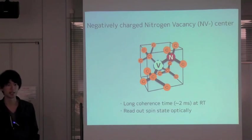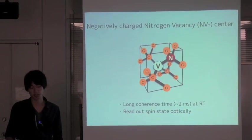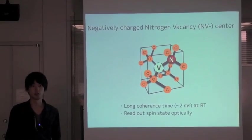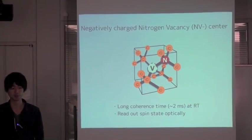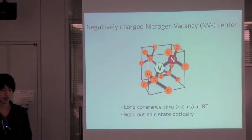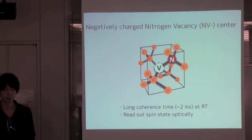NV minus center has a spin which has a long coherence time, on the order of 2ms at room temperature. And we can read out spin states optically.